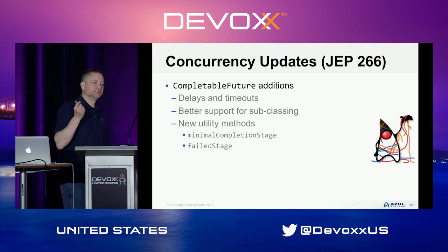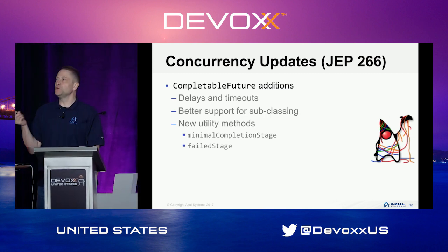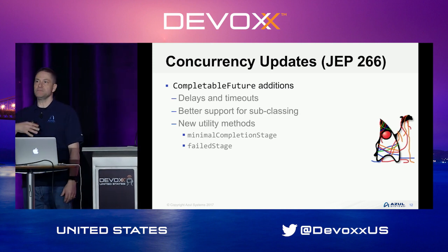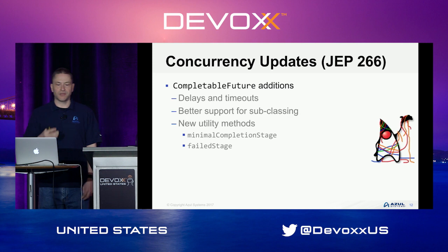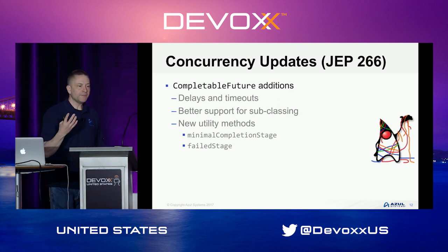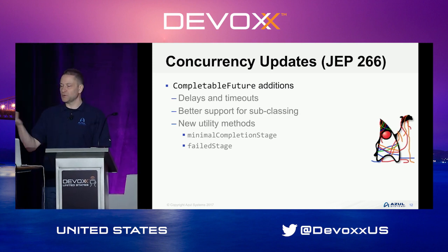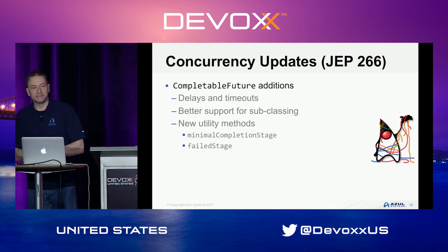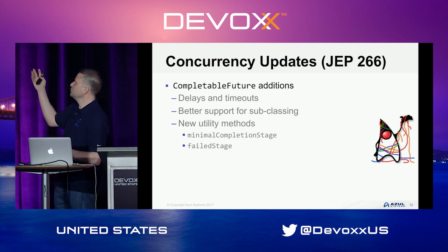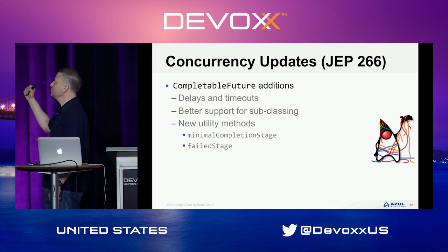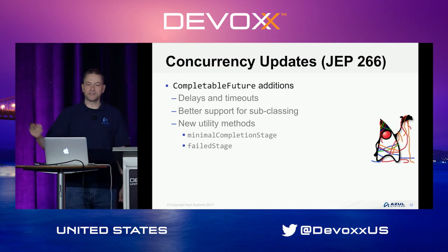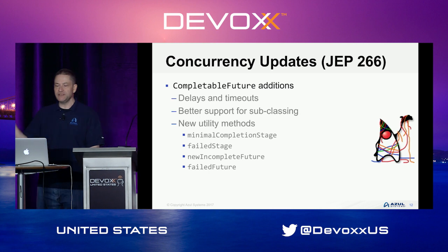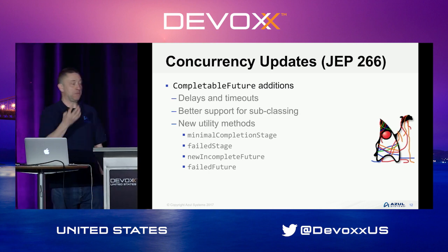CompletableFuture, introduced in JDK 8, has been extended with new features — things like delays and timeouts, and better support for subclassing. There are new utility methods including a minimal completion stage, a failed stage, a new incomplete future, and a failed future.